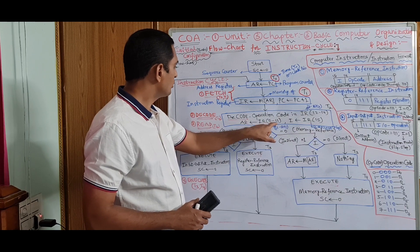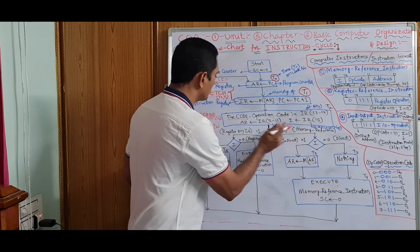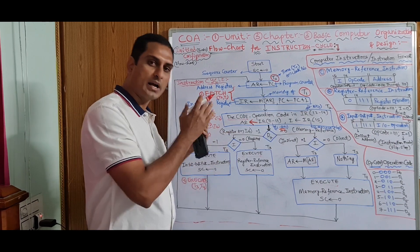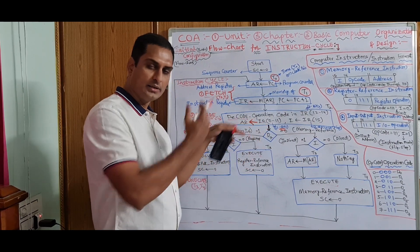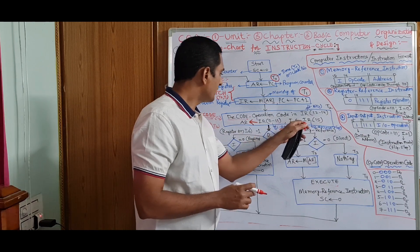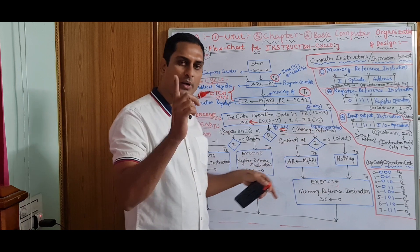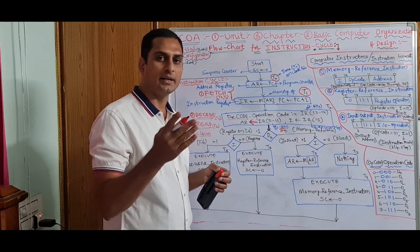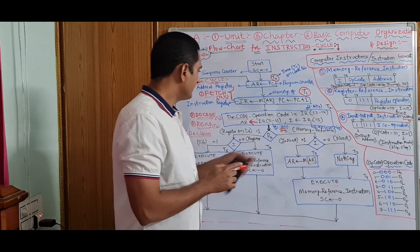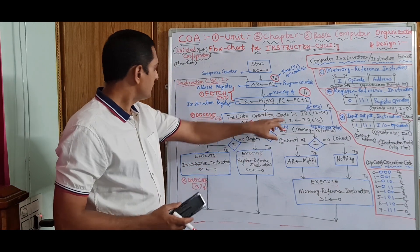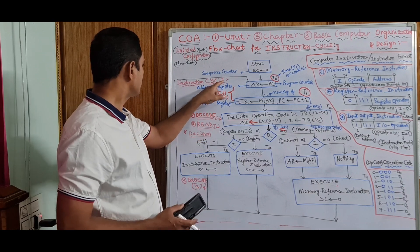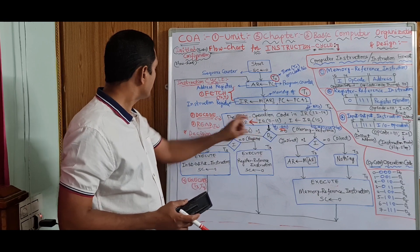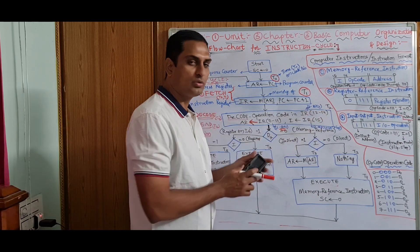IR bit 15 — only 1 bit — is shifted to I. I stands for instruction mode, or addressing mode. If it is 0, this is direct addressing; if it is 1, that is indirect. Decoding will be done at T2 — the second instruction cycle phase. Decoding and reading will be done at T2 time clock pulse.